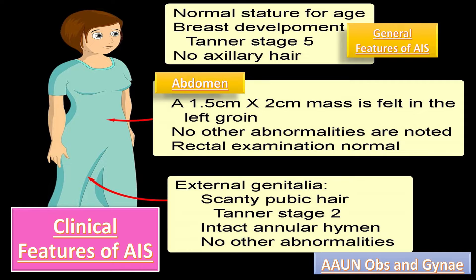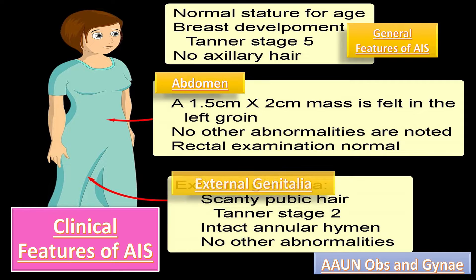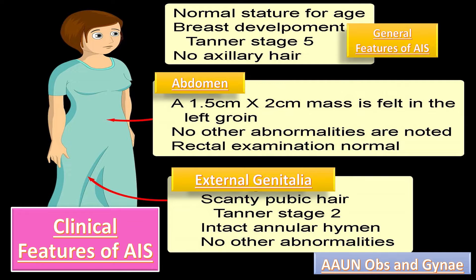On external genitalia examination in patients with AIS, we find female external genitalia with variable vaginal hypoplasia, scanty pubic hair at Tanner stage 2, and usually an intact hymen. No other abnormalities are detected.